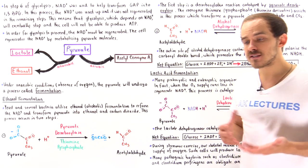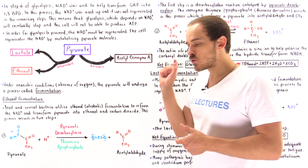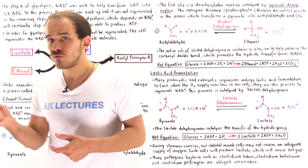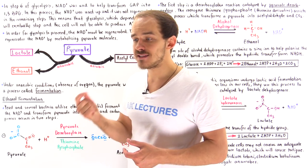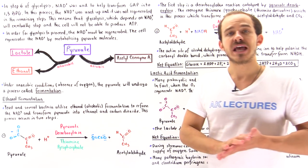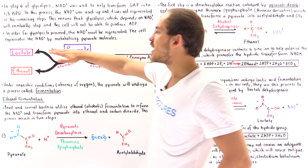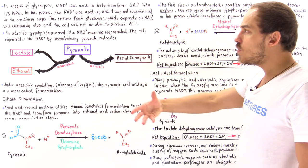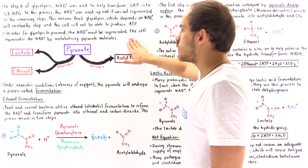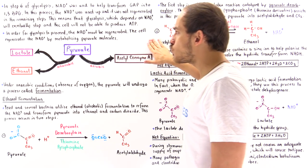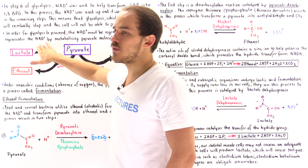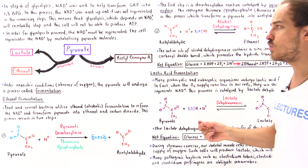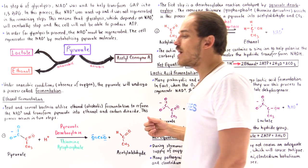The way our cells fix this problem is by taking the pyruvate molecule and metabolizing it to regenerate those NAD+ molecules. In order for glycolysis to proceed over and over, the NAD+ must be regenerated. The cell regenerates NAD+ by breaking down and metabolizing those pyruvate molecules produced at the end of glycolysis.